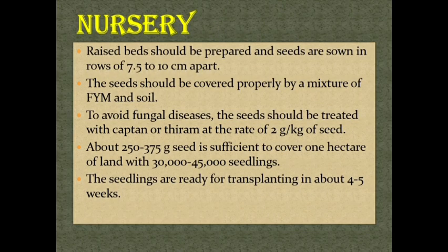Nursery. Raised beds should be prepared and seeds are grown in rows 7.5 to 10 centimeters apart. The seeds should be covered properly by a mixture of FYM and soil. To avoid fungal diseases, the seeds should be treated with Captan or Thiram at the rate of 2 grams per 1 kg of seed. About 250 to 375 grams of seed is sufficient to cover 1 hectare of land with 30,000 to 45,000 seedlings. The seedlings are ready for transplanting in about 4 to 5 weeks.